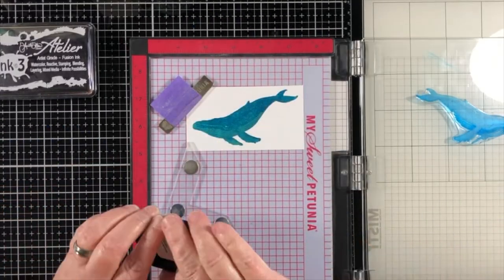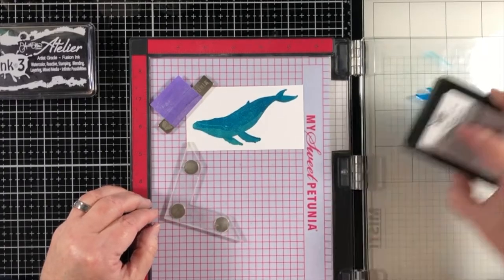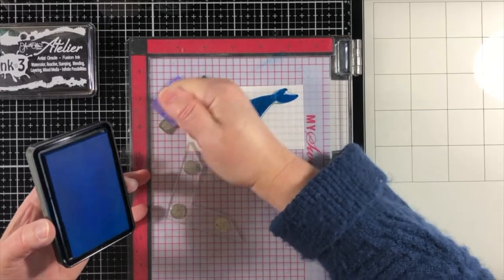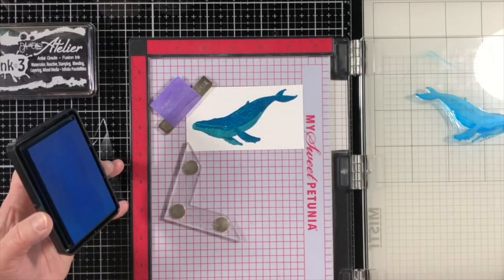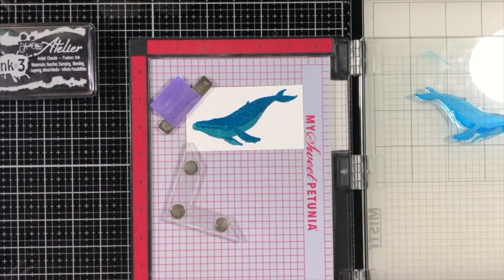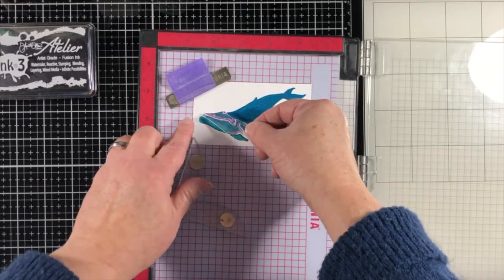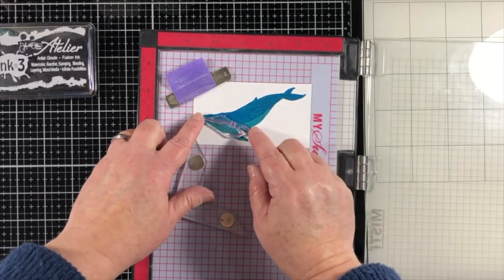So the first image of the whale I stamped in Trinity teal. And that was my lightest color. And now I'm using the peacock blue, which is going to match my background that I watercolored. And I'm stamping that two times. I really want that dark blue to show up on the whale.